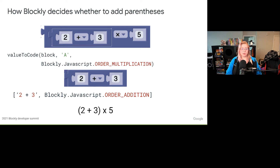Going back to the previous example, let's talk about how Blockly determines whether to add parentheses. In the code generator for the outermost math arithmetic block, value-to-code is called to get the first input block's code and is passed order multiplication to represent that the multiplication operator is the operator with the strongest precedence that could split the code returned by the value-to-code call. When value-to-code gets the generated code for the inner math arithmetic block, it receives the information that the addition operator is the operator with the weakest precedence that the return code could split at, through the order addition enum. Since order addition is weaker than order multiplication, parentheses are added around the return of value-to-code and the resulting output is (2 + 3) * 5.